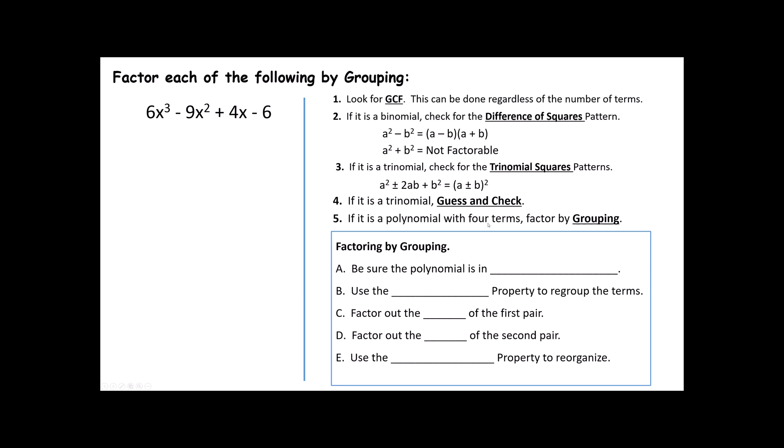If any of the things that I reviewed here are tricky or difficult or challenging for you, I do have videos on those. Now, if it's a polynomial with four terms, we're going to factor by grouping. And this is actually a whole lot easier than it at first appears. The first thing you're going to want to do is make sure that your polynomial is in standard form. Standard form says that you have the highest degree exponent first, the next degree exponent next, and you go in descending order.